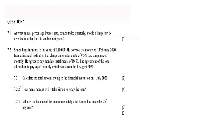Question 7.2: Simon buys furniture to the value of R10 000. He borrows the money on 1 February 2020 from a financial institution that charges an interest rate of 9.5% per annum compounded monthly. He agrees to pay monthly installments of R450, starting from 1 August 2020.